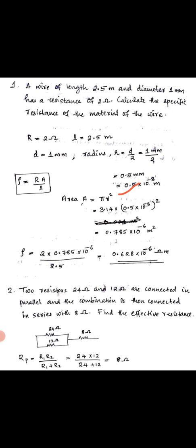Substituting: area = 3.14 into (0.5 into 10 raised to minus 3) squared = 0.785 into 10 raised to minus 6 meter squared. Now substituting into the resistivity formula: rho = 2 into 0.785 into 10 raised to minus 6 divided by 2.5. The answer is 0.628 into 10 raised to minus 6 ohm meter.